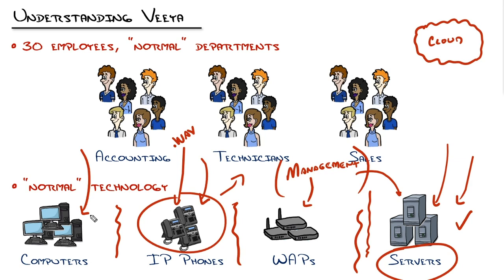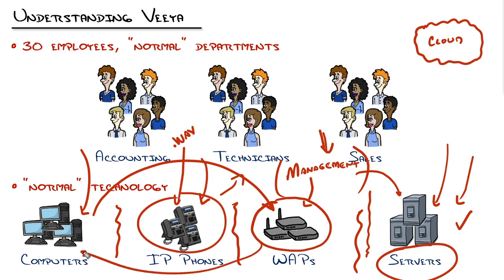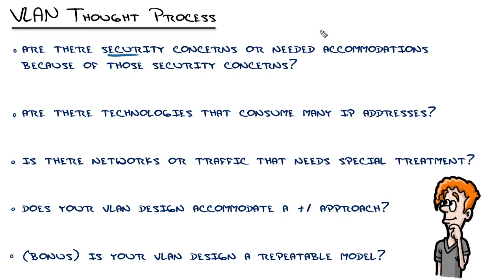Thinking about computers and wireless access points, I should finish my thought: when I think about wireless access points, I think about them in two ways. The first is management, which I addressed by combining it with servers. The second is what those access points are serving. Typically in an organization like VIA, you'll have devices and employees you manage, and then devices and people you don't. It's very commonplace nowadays to have a guest wireless network. If you don't have one, you'll find employees giving out the pre-shared key for your corporate VLAN just to get guests online. So just from that first question about security concerns, we've already generated a number of VLANs.